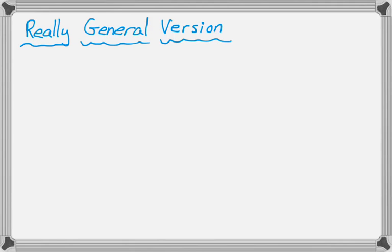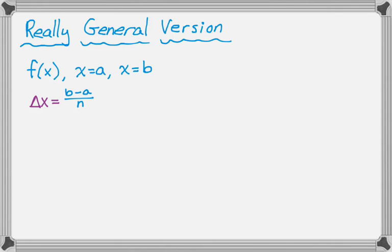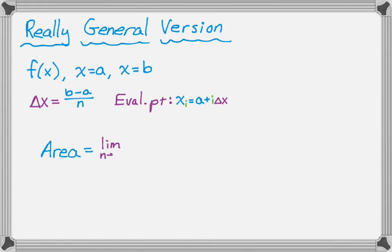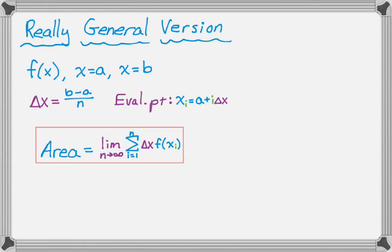Here's a general version of what you're doing. We have f of x, x equals a, x equals b, and we're going to use n rectangles. First, calculate delta x, which is b minus a over n. Then calculate the evaluation point x sub i, which is always equal to a plus i delta x. The general formula for the area is the limit as n approaches infinity of the summation from 1 to n of delta x times f of x sub i, and that gives you the answer.